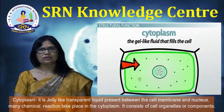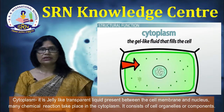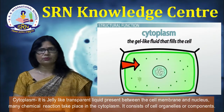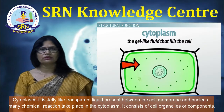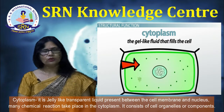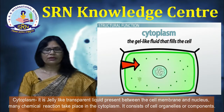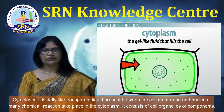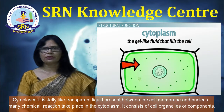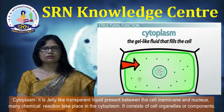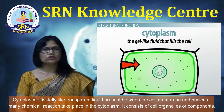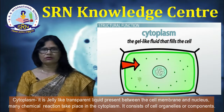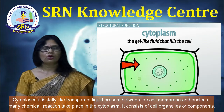Cytoplasm is a jelly-like transparent liquid present between the cell membrane and nucleus. Many chemical reactions take place in the cytoplasm. It consists of cell organelles or components.